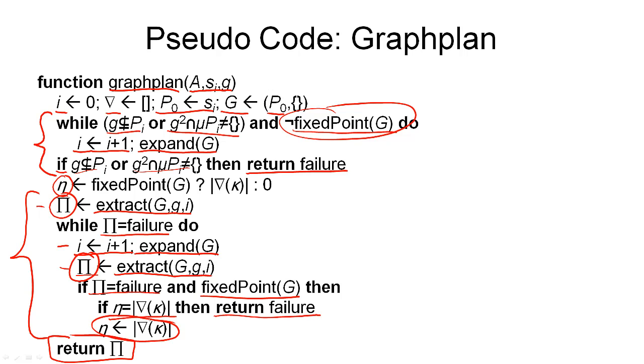Otherwise, we store the size of the no-good table, and remember that for the next iteration of the loop. So that was the detailed Graphplan algorithm.